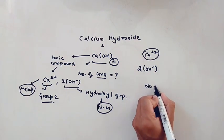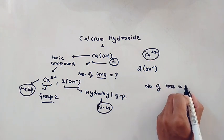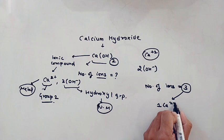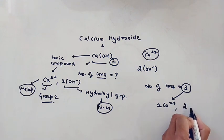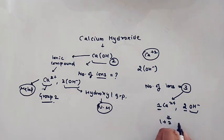So the number of ions are 3, that is 1 Ca²⁺ and 2 OH⁻. So this is 1 plus 2, that equals 3. If you would have been asked the number of charges, total number of charge including positive and negative,